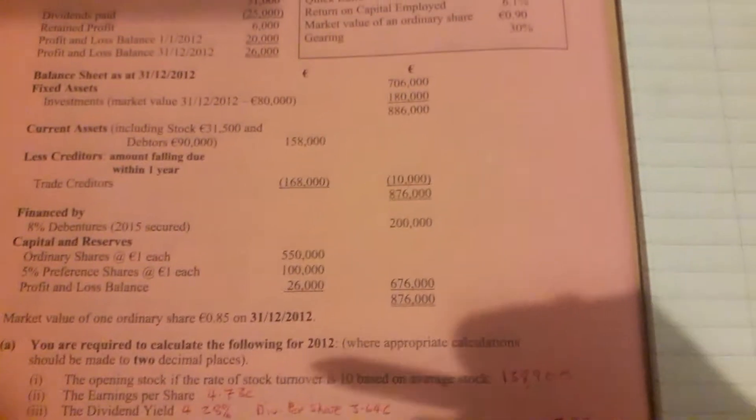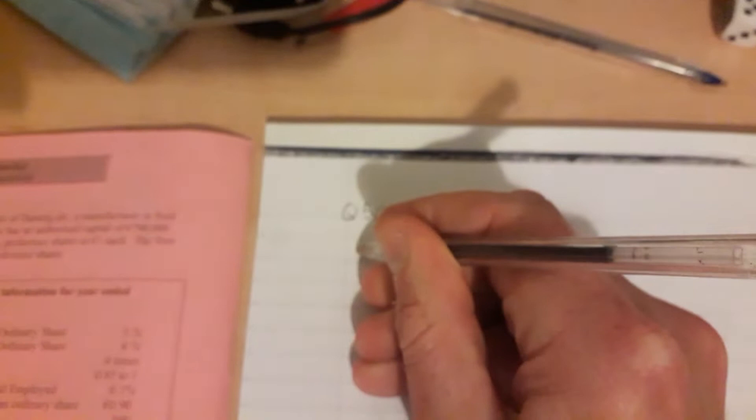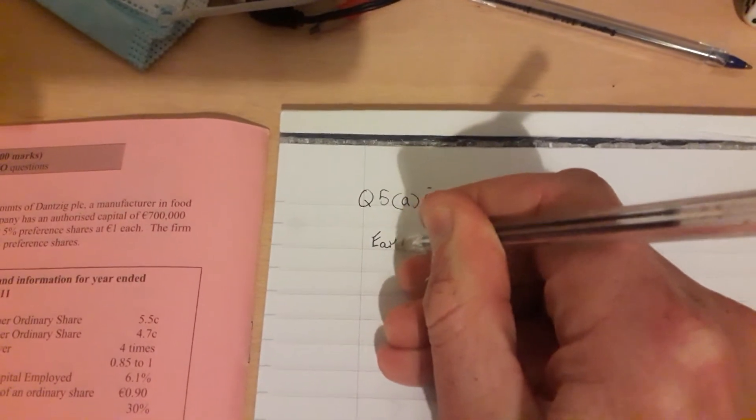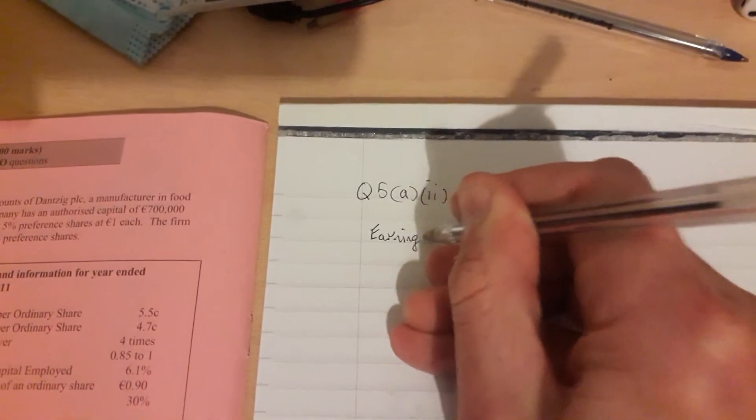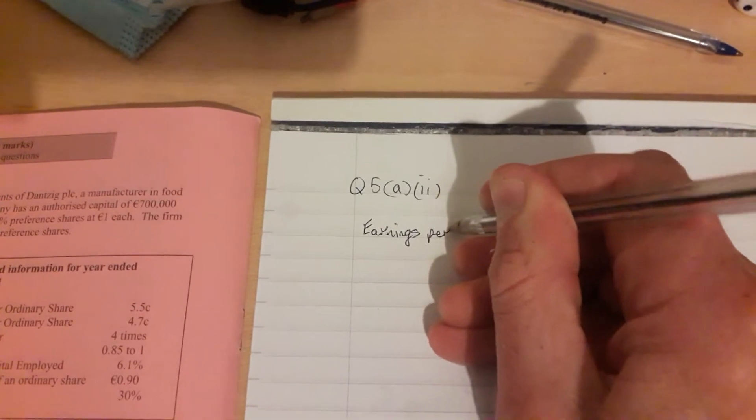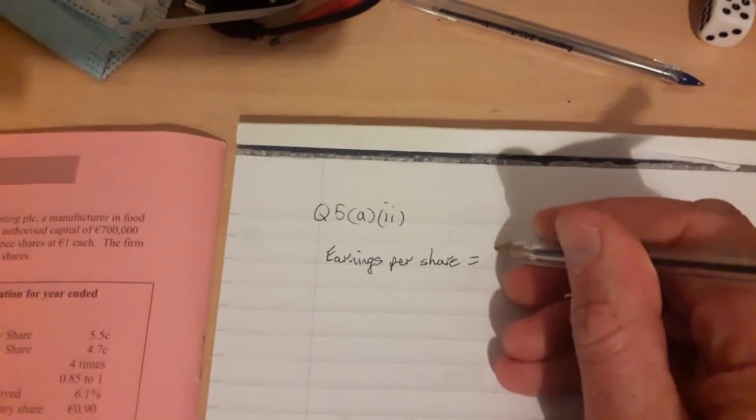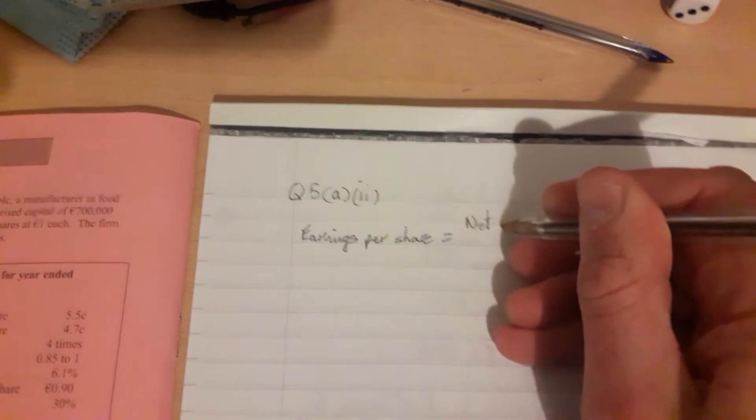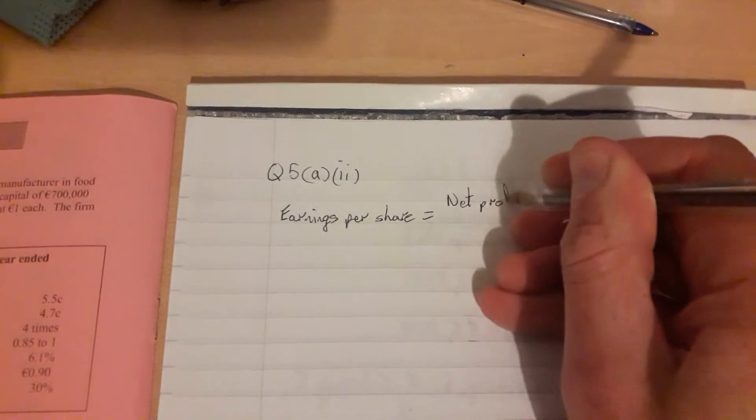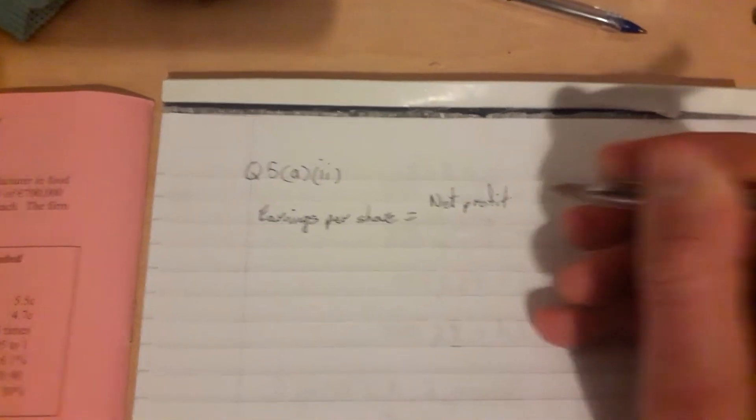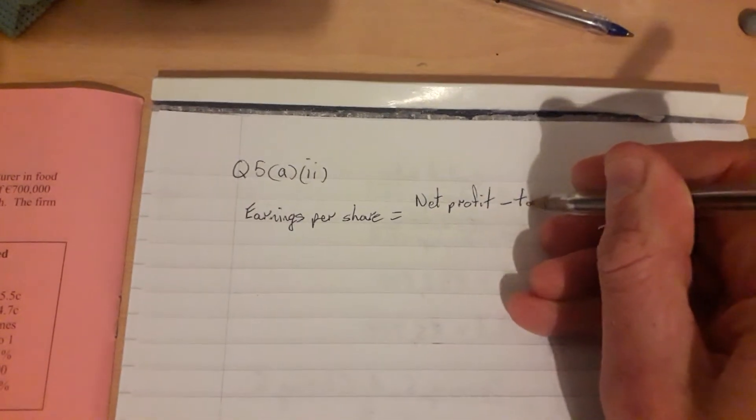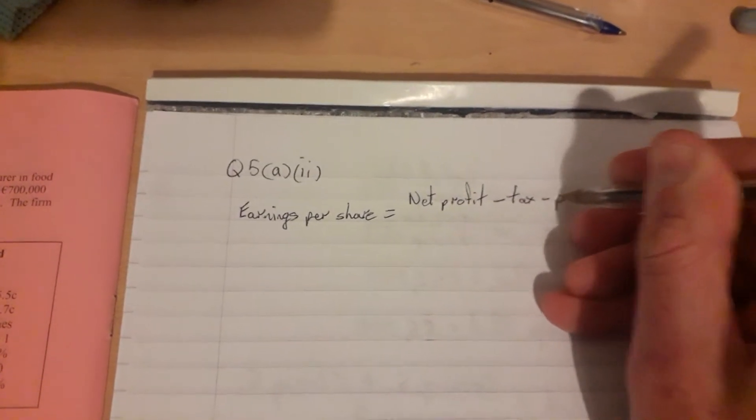Earnings per share is another formula. Earnings per share equals net profit minus tax minus preference dividends.